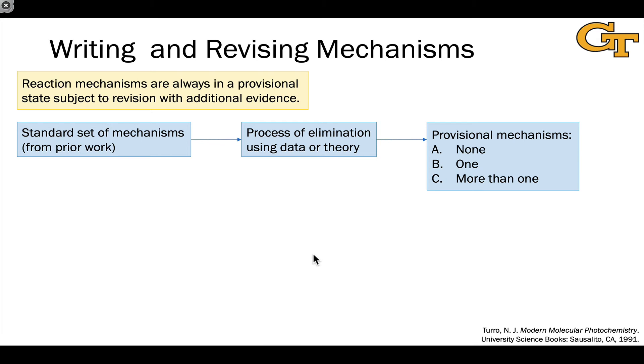to go from reactants to products. At the end of that process, we end up in one of three situations. We either have no provisional mechanisms, something entirely new, one provisional mechanism, or more than one. And the last case is quite common.